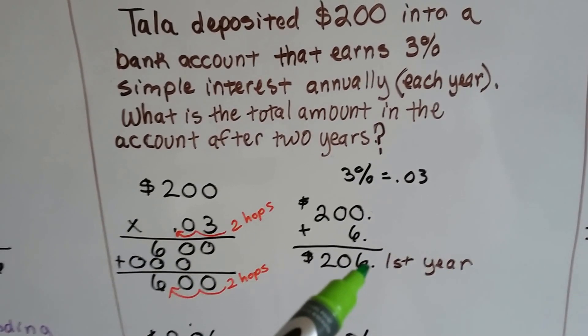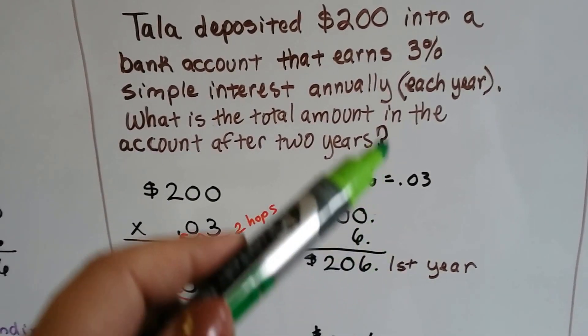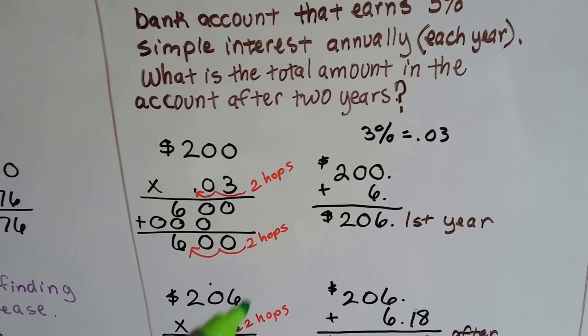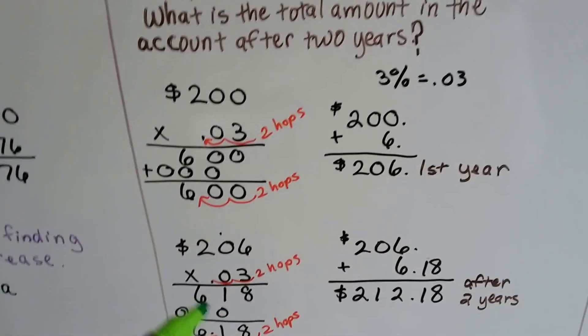Now that is the number, the $206 is what we're going to base the second year on. So we need to multiply that $206 by .03 for the second year.